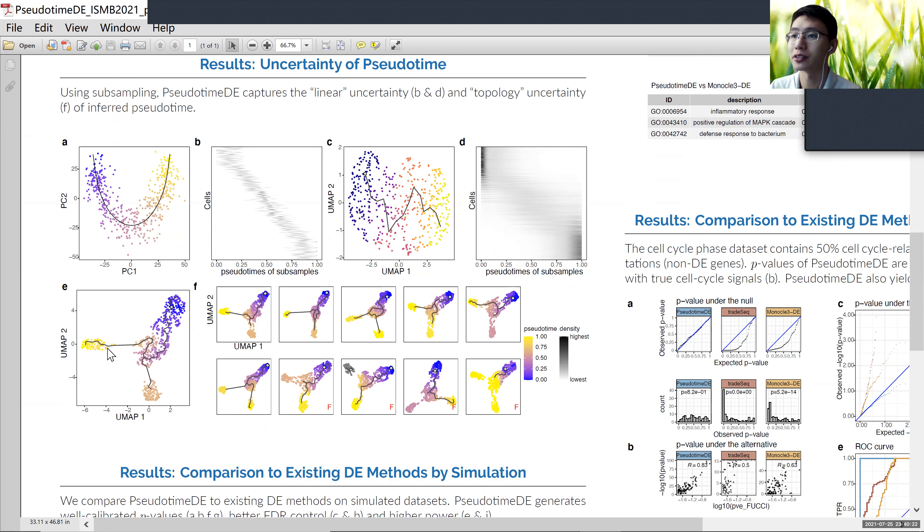The second layer of uncertainty is topology uncertainty. In the original data set, we can infer a bifurcation topology. But when we use subsampling with 10 random subsamples, we observe four of them show different topologies compared to the original data set. We call this uncertainty topology uncertainty.